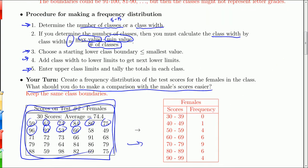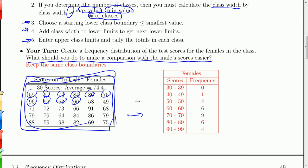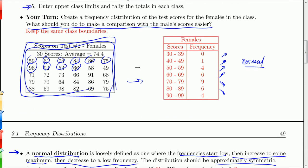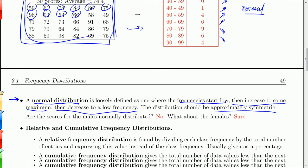If you look at the female scores, that's what happens: zero to one, one to four, four to six, six to nine — it goes up — then nine to six, six to four — back down. So we went up to some peak and back down. So this is approximately normal. Whereas the male distribution is not normal.